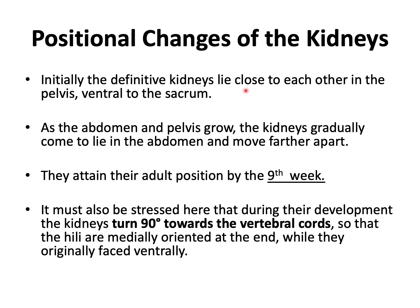Initially the definitive kidneys lie close to each other in the pelvis, ventral to the sacrum. As the abdomen and pelvis grow, the kidneys gradually come to lie in the abdominal region and move apart, attaining their adult position by the ninth week. During development, the kidneys also undergo a 90-degree rotation toward the vertebral column so that their hilum becomes medially oriented. Originally the hilum faced ventrally, and it is due to this rotation that the hilum is directed toward the vertebral column.